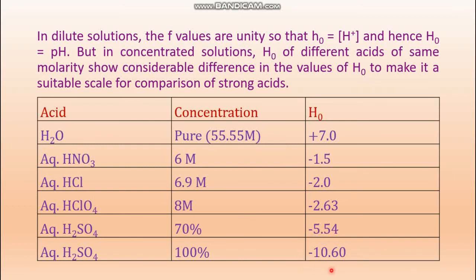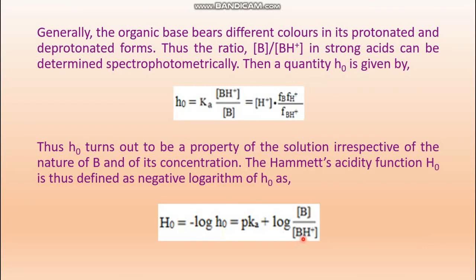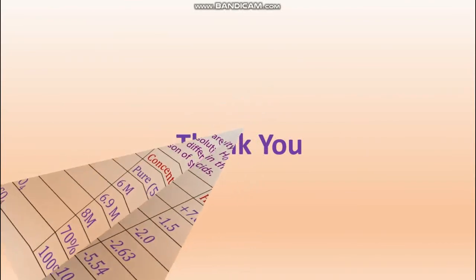So for strong acids with concentration greater than one, instead of pH we must use Hammett's acidity function H₀. The expression is: H₀ = pKa + log([B]/[BH⁺]), where B is the indicator base and BH⁺ is its protonated form. That's all about Hammett's acidity function. Thank you.